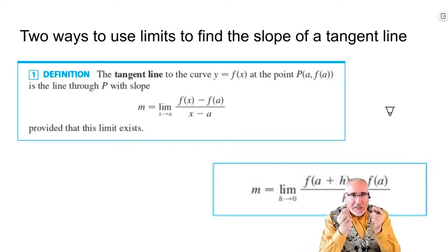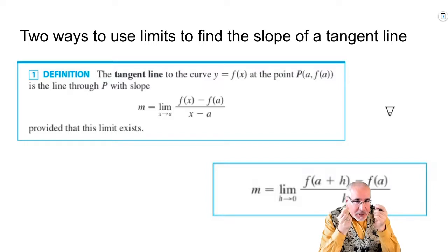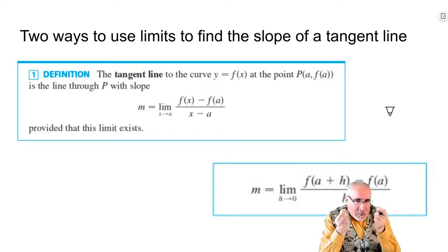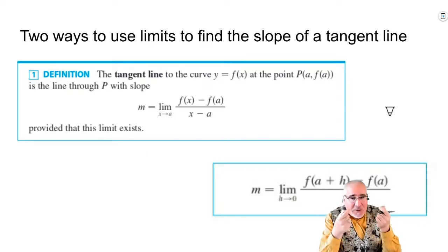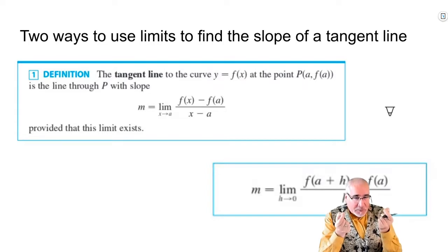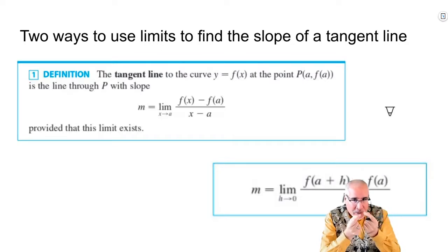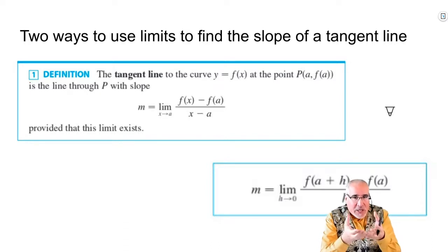In practice, the form with h ends up being the one we use more quite a bit, but both will work. Again, it's just that concept from the applet — you're bringing two points on a curve together, subtracting two y-coordinates and two x-coordinates from those same two points to get a slope. You're getting a secant line slope, an average rate of change. The closer you bring them together until they're at the same point, then you make it an instantaneous rate of change.